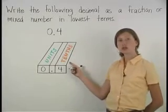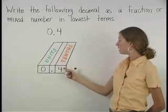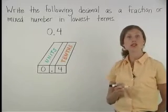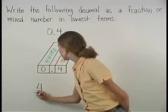Using the place value chart, we can see that the decimal 0.4 is 4 tenths. So we can write 0.4 as the fraction 4 out of 10.